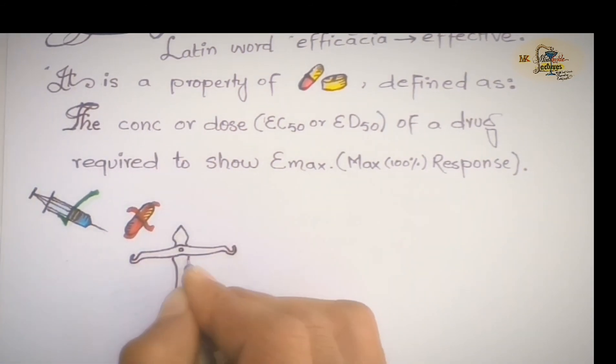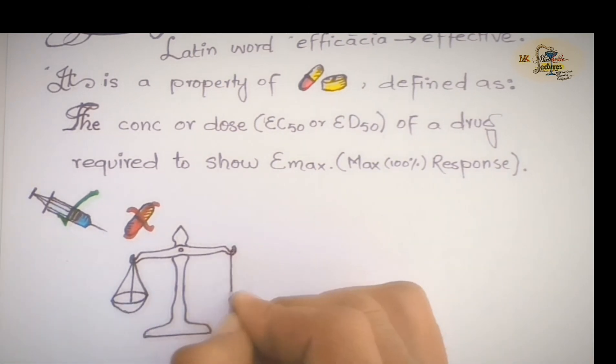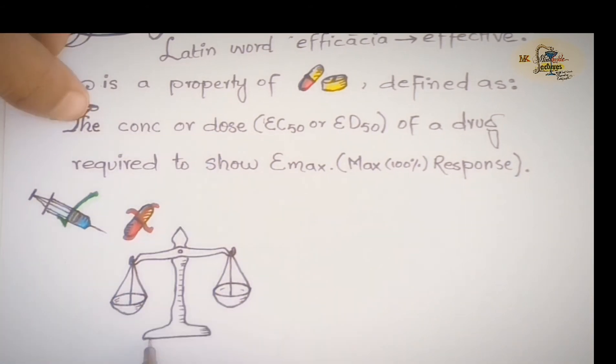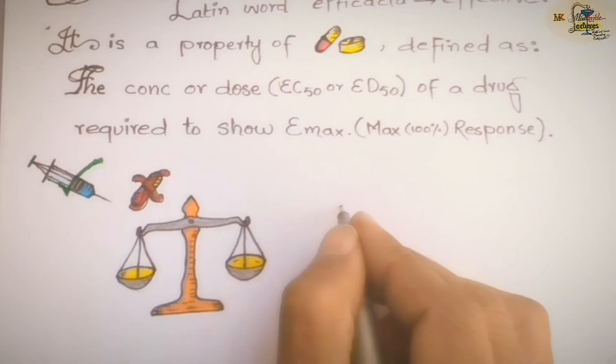And after that, the efficacy and potency of a drug is a comparative study between two or more drugs of the same class or of the same actions. One of the causes of variation of potencies and efficacies between or among drugs is that one drug may be a full agonist and the other drug of the class may be a partial agonist.